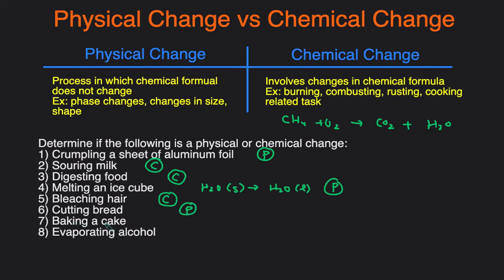Baking a cake, so as we talked about earlier, anything that's typically cooking related is going to be a chemical change. So baking a cake is a chemical change. And then lastly, evaporating alcohol. When you're evaporating alcohol, it's just going from alcohol that's a liquid to alcohol in the gas form. It's still alcohol before and after, but this is a phase change, so that will be an example of a physical change.